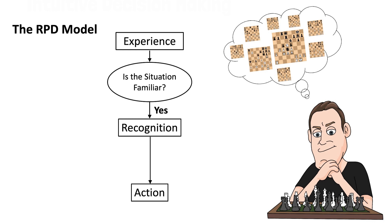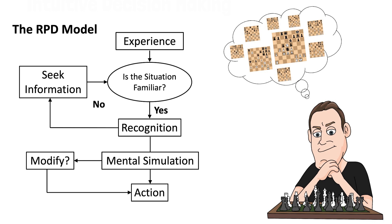Intuition is also used to recognize the unexpected, leading us to actively seek out more information. We then mentally simulate and possibly modify an action.